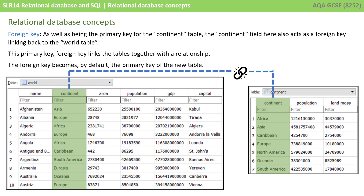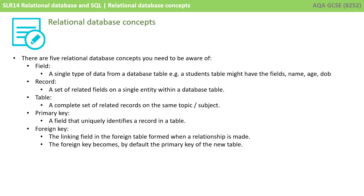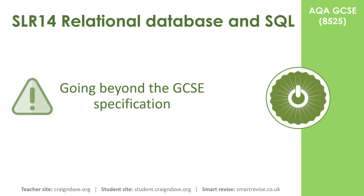As mentioned in the previous video, with a relational database, tables can be joined together. As well as being the primary key for the continent table, the continent field also acts as a foreign key which links back to the world table. It's this primary key–foreign key link which joins the tables together into a relationship. The foreign key becomes by default the primary key of the new table. That covers the five relational database concepts — pause the video and take some notes.